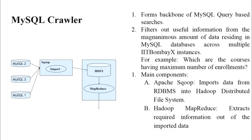The MySQL crawler forms the backbone of query-based searches. It filters out useful information to answer relevant queries. This component is made of two parts: Apache Scoop and Apache Hadoop. Scoop imports the required data from multiple IIT BombayX instances and transfers it to the HDFS system. Then a MapReduce program, written in accordance with the operator, runs on the imported data and produces output which is stored in Elasticsearch and used to answer queries.